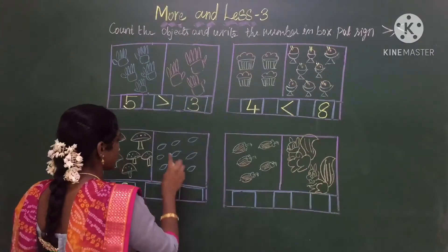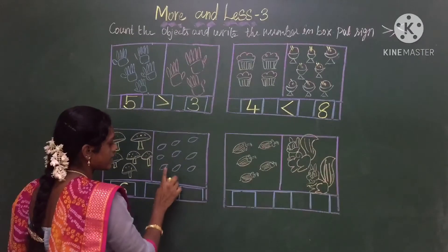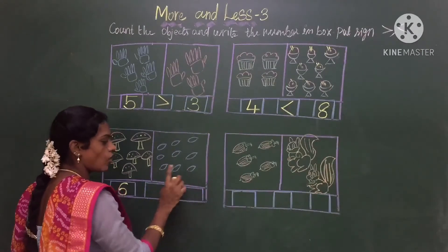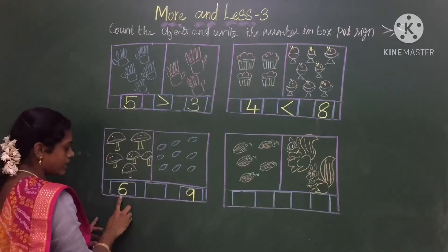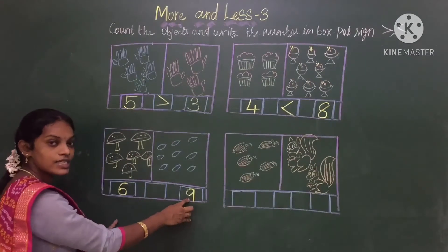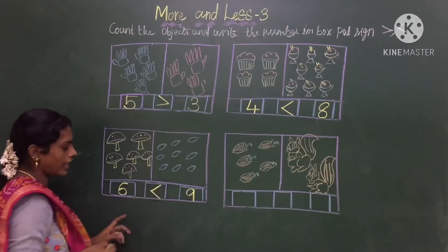Now we will count the drops: 1, 2, 3, 4, 5, 6, 7, 8, 9. How much? 9. So which object is more? 6 or 9? 9 is more. So we should put the sign like this.